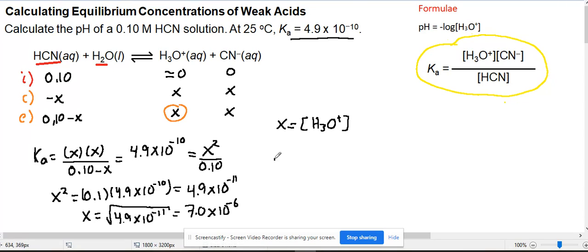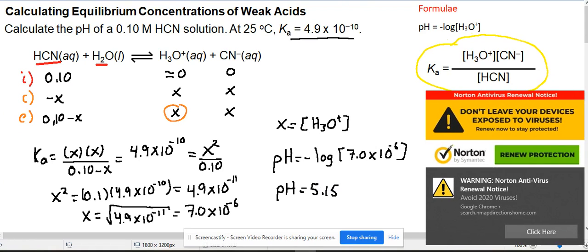Now we're ready to calculate the pH. pH is negative log of this concentration X, which we just found to be 7.0 times 10 to the negative 6. Entering that in the calculator gives pH equals 5.15. So it's an acidic solution because we have a weak acid.